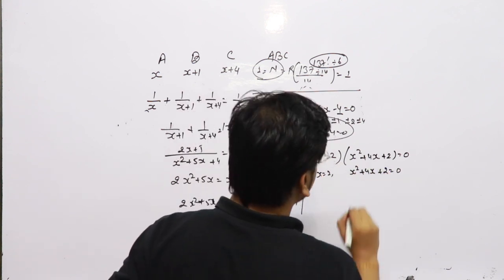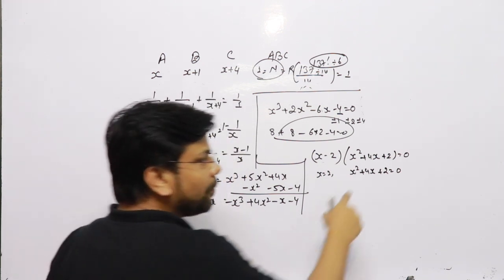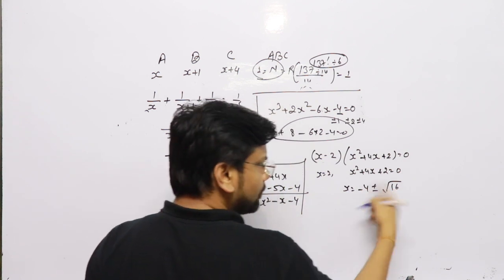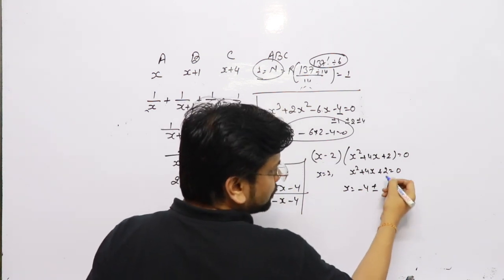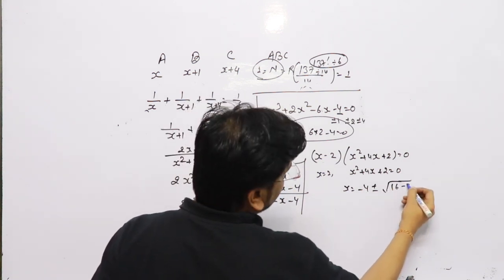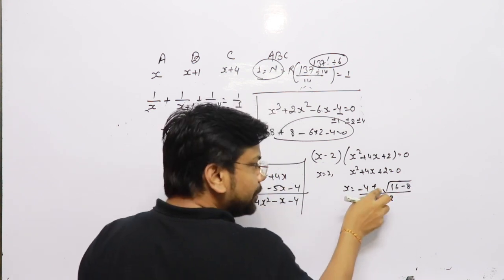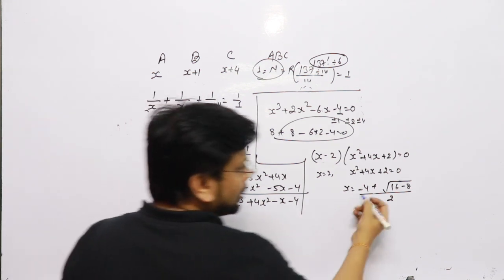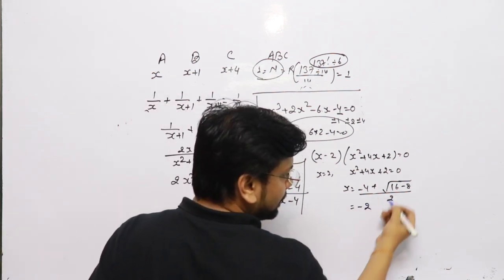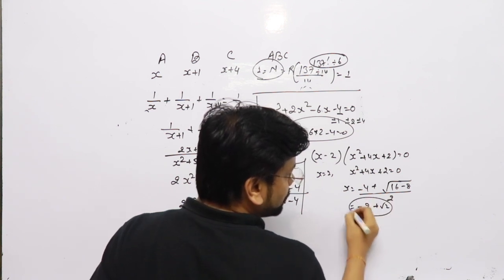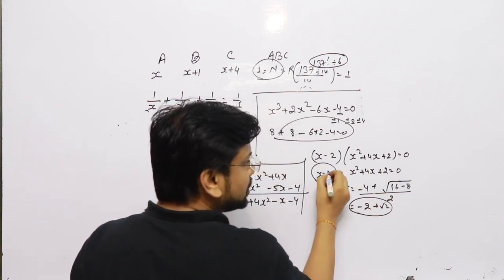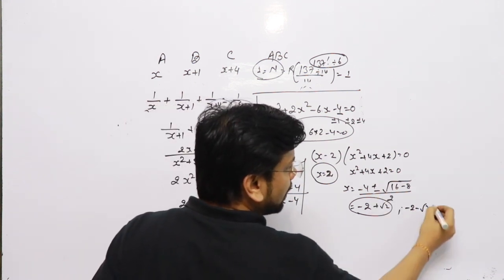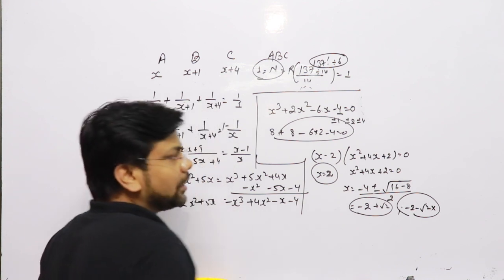From here we get x = (-b ± √(b²-4ac))/2. In general we do not take the minus sign in arithmetic because negative doesn't go. This one is -2. If I divide, +√2 is one solution. So one solution is x=2 and another solution is -2-√2. In arithmetic this doesn't work.